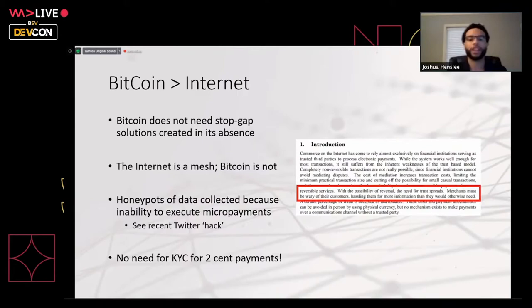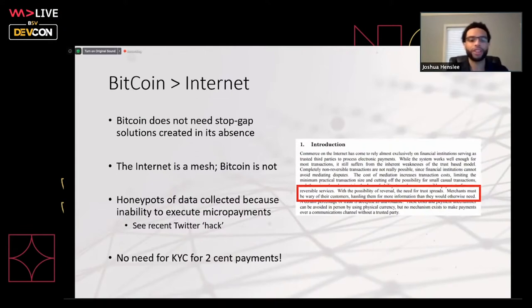The recent Twitter hack showed all this data sitting on their servers. The issue with Twitter is there are no micropayments — that's why they need ads. Social media influencers make money because people follow them and see ads. But when people are paying you two cents per interaction, you don't need to know your customer. I don't need to know who you are. Twitch and Streamanity are great examples — they don't need to know anything except that you've got money and want to pay them, as long as you're not doing anything illegal.